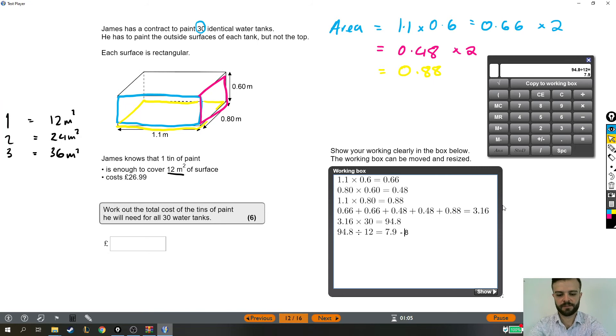So that means we're going to need eight tins. And finally, we know the cost of a tin of paint, so we do 8 times £26.99, because £26.99 is how much one costs. So eight lots of that is how much eight of them will cost. So it is going to cost him £215.92. So there's our final answer - work out the total cost of the tins of paint: £215.92.